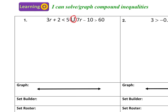I'm just going to subtract two from both sides. This cancels out. I'm left with 3R is less than or equal to three. Now I know I have three times R, and the opposite is divide, so I'm going to divide three to both sides. This cancels, and the inequality I'm left with is R is less than or equal to one, since three divided by three is one.